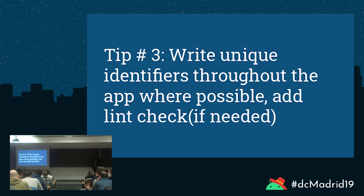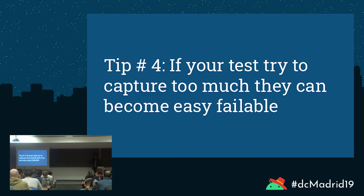Tip number three: write unique identifiers throughout the app where possible, and also add a lint check if needed. If you already have a deployment process doing lint checks for code style, you might as well also check whether IDs and labels are present on parts of the application. This is another way to give you a check on how ready your app is to be automatable.